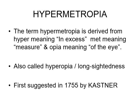It is also called hyperopia or long-sightedness. The term was first suggested in 1755 by Kastner. Hypermetropia can be asked in your theory examination as a short note. In your viva also, you have to answer about hypermetropia, convex lenses, and the uses of convex lenses. This topic is important from theory as well as viva point of view.